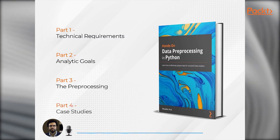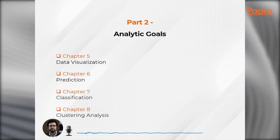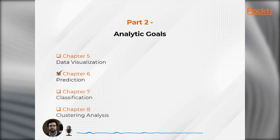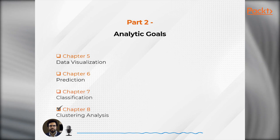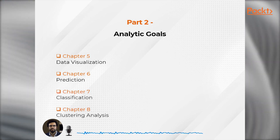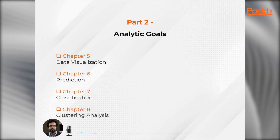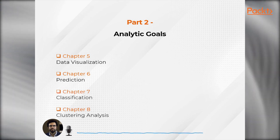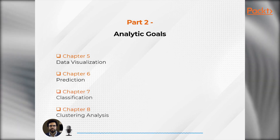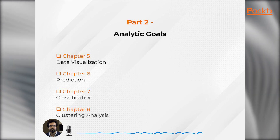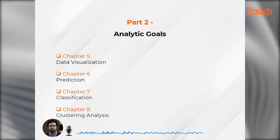Now let's move to the second part of the book: Analytic Goals. Some readers may be familiar with the content in this part and may skip it. This part includes four chapters: data visualization, prediction, classification, and clustering analysis. It may sound counterintuitive to learn about these before data preprocessing — after all, analytics comes after preprocessing. But here's the catch: we preprocess the data for the analytics, and for effective data preprocessing we need to understand how the data will be used. This is what distinguishes this book from other data cleaning books. Data cleaning is often presented as a process done in isolation regardless of the analytics, and that is far from the truth. Effective data cleaning and preprocessing are done while informed about the analytics they want to support.